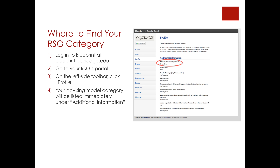You may be wondering, how do I determine my RSO's category? You may find out by logging in at Blueprint. From there, go to your RSO's portal and on the left side toolbar, click profile. Your advising model category will be listed immediately under additional information.